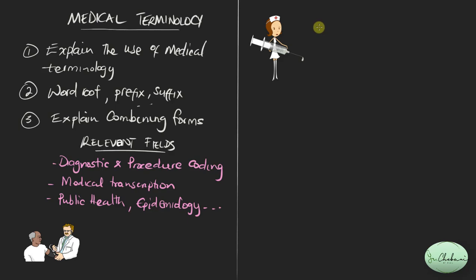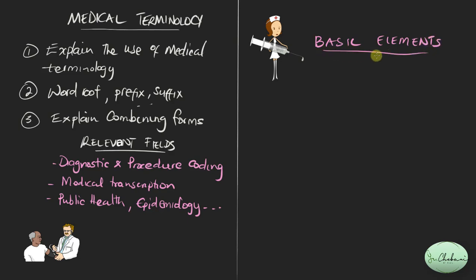In the next section, let us discuss some of the fundamental word elements — the basic word elements that you're expected to learn. So basic elements. Number one is the word root. A word root is the fundamental meaning of a word.